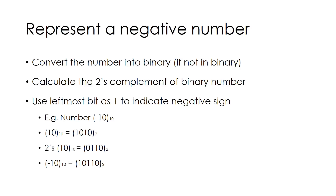In binary, we cannot use plus or minus sign. Rather, we need to make use of a bit to represent a number as positive or negative. To represent a negative binary number, the first step is to convert the number into binary if it is not already in binary form. Then calculate the two's complement of that number. If you don't know what two's complement is, I have another video explaining it.